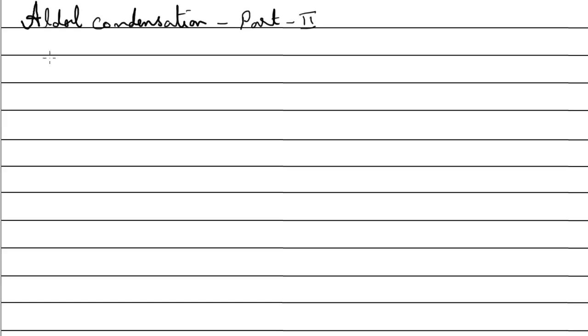In this video we will be looking at Part 2 of aldol condensation, dealing with some very specific examples. As discussed in the previous video, aldol condensation happens when you use two carbonyl compounds, with the requirement that at least one should have one alpha hydrogen. Generally, a carbonyl compound A reacting with itself gives a product in the form of an aldol.